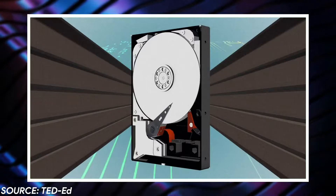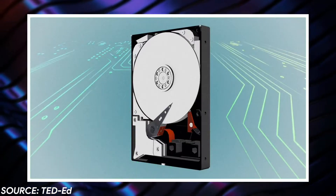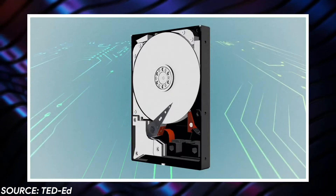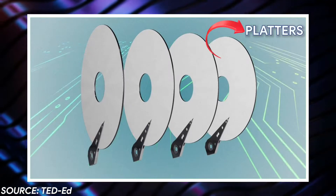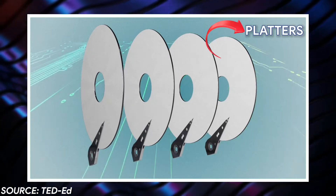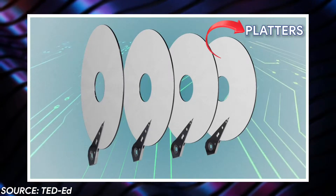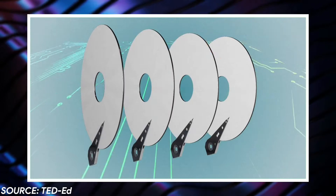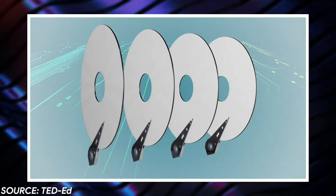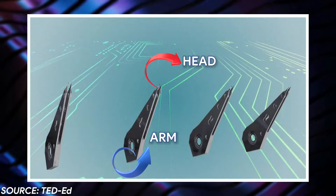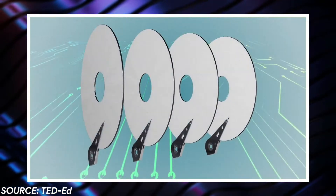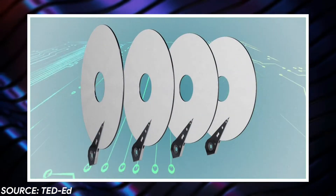An HDD has spinning disks made up of ferromagnetic materials, and these disks are technically called platters. The platter is the place where the data is actually stored inside an HDD. In order to read or write data onto the platter, a head connected to an arm that floats above the platter is used. It is just similar to the structure of a turntable record player.